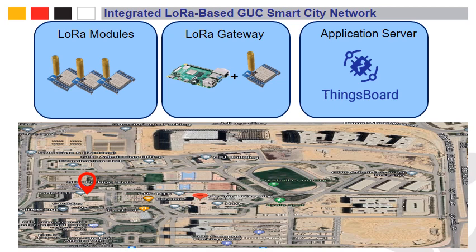The smart city architecture starts from the LoRa modules which have sensors connected to them, then a LoRa gateway — which in our project is a LoRa receiver connected to a Raspberry Pi. This gateway forwards information to the application server or cloud, which is supported through ThingsBoard. Currently at the GUC, I have a Raspberry Pi with a LoRa receiver connected to it in my office.